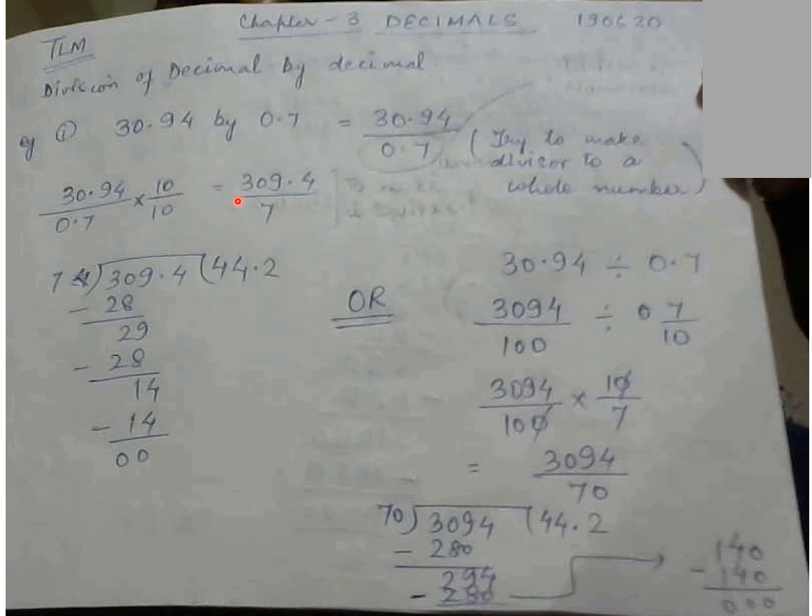So the new number will be 309.4 divided by 7 and now this we have already done. How to divide and get the answer? You will follow the steps. You will get the answer as 44.2.